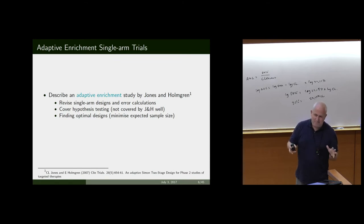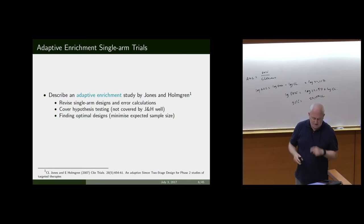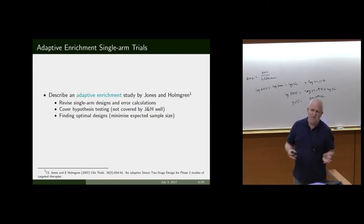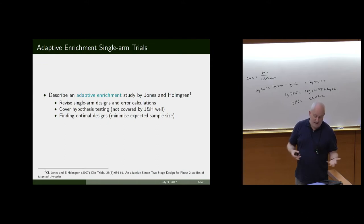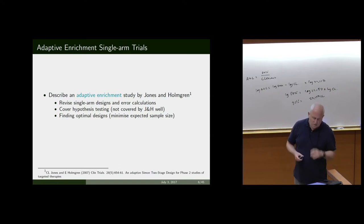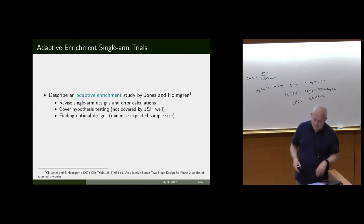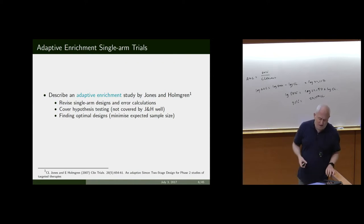Their paper wasn't exactly the clearest, as some of the mathematical description was a bit shaky and they didn't really discuss the hypothesis testing part of the design very much. They certainly didn't look at optimal designs — they had quite a convenience design which didn't really hit the error probabilities you'd normally see in a trial. When we talk about optimal designs here, we're looking at minimizing the expected sample size at the global null hypothesis.